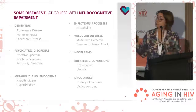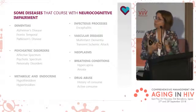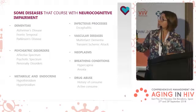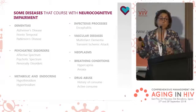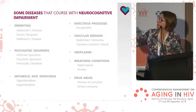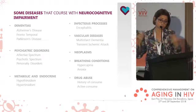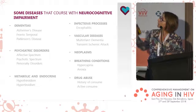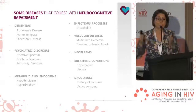Here are some diseases that cause neurocognitive impairment. When we think about neurocognitive impairment, we tend to think only of dementias, but it also includes different kinds of dementias, psychiatric disorders with specific profiles such as schizophrenia, bipolar disorders, personality disorders, HIV and related conditions, metabolic and infectious diseases such as encephalitis, vascular diseases, some kinds of neoplasms, and drug abuse — including both history and active consumption.